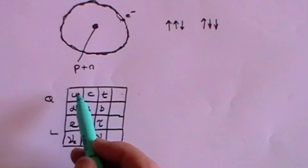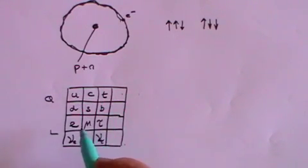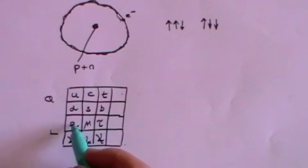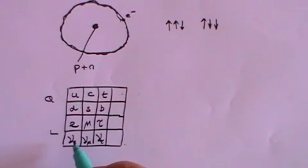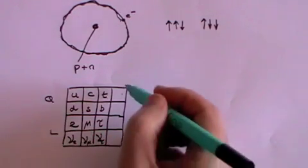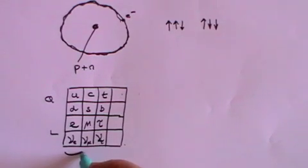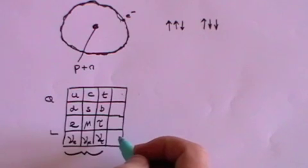We've got basic quarks, the up and down, and then four heavier versions. We've got the basic leptons, the electron and the electron neutrino, and four heavier versions. What are these four? Oh, and these are all particles. What are these four boxes for?